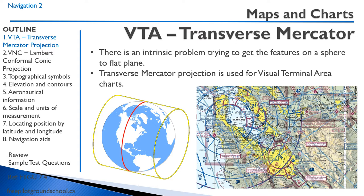If we think of a globe with a light inside and project that light — whatever's on the globe — onto a cylinder surrounding the globe, that gives us a Transverse Mercator projection. These Transverse Mercator projections are used for visual terminal area charts. We essentially have a cylinder around the outside of the earth with the axis going east to west, and then we project out what we see.